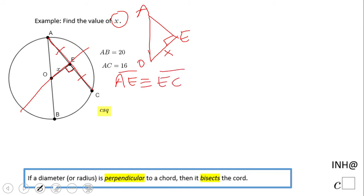Why? Because that segment is perpendicular on the chord. That means AE equals EC, which means AE will be half of AC. AC being 16, we know now AE is 16 divided by 2, which is 8.